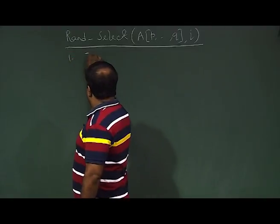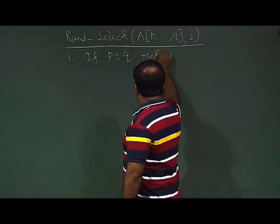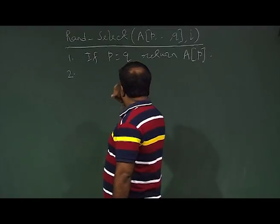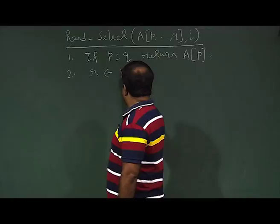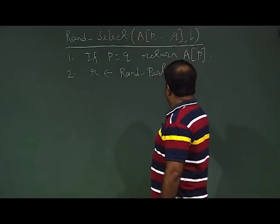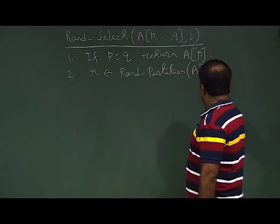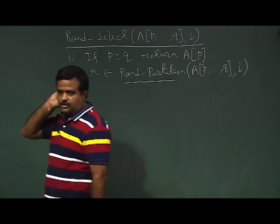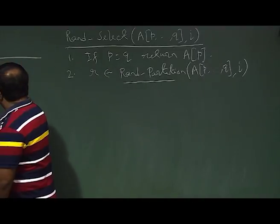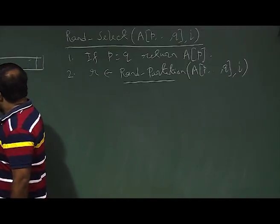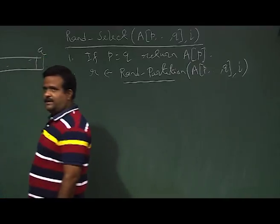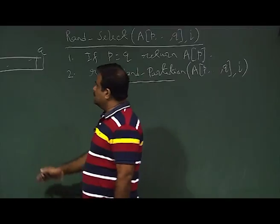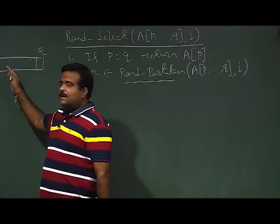The code for Randomized Select: if p equals q, we simply return a[p]. Otherwise, we call Randomized Partition on a[p..q]. In our original partition algorithm for quicksort, we chose a[p] as the pivot element. But in the randomized version of partition, any one of the indices from p to q can be the pivot element.